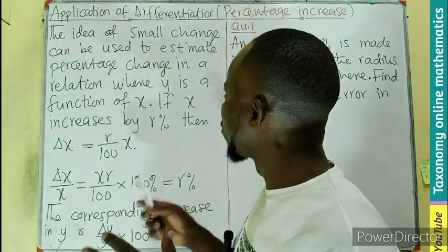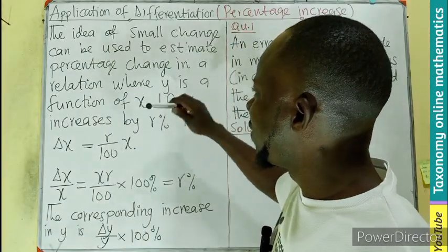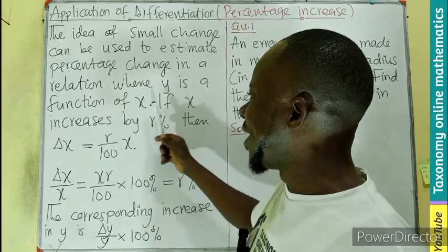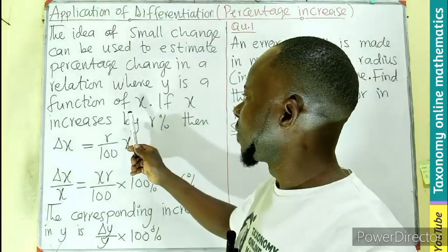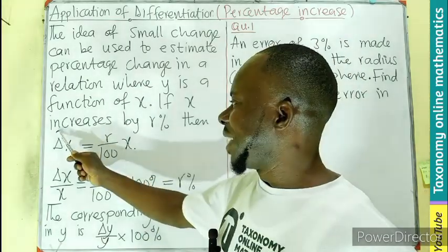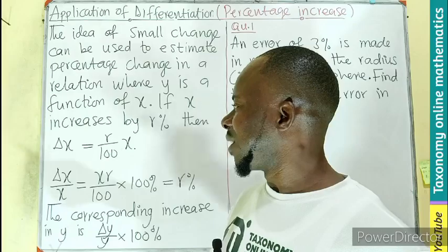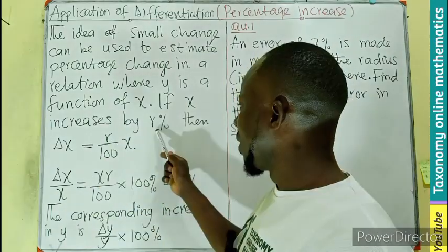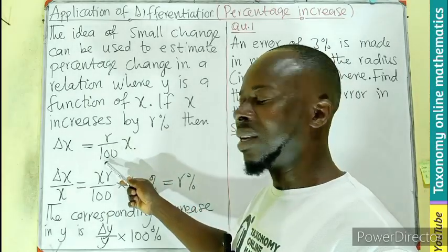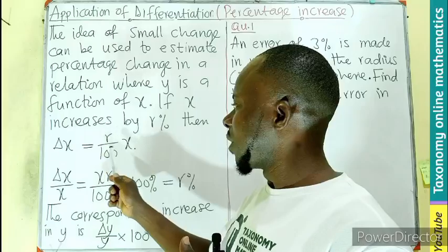So the idea of a small change, what we did in the previous episode, can be used to estimate the percentage change in a relation where y is a function of x. If x increases by r percent, then delta x, which is the change, the increment in x, equals the percentage. We know r percent is r over 100 times the variable.